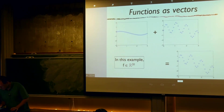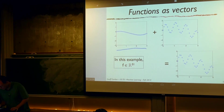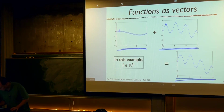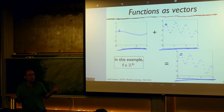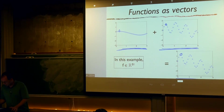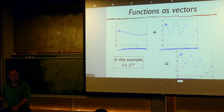We can take this 31-dimensional vector function and add it to another 31-dimensional vector, plotting the result as another function. This is just a representation of a vector. Now I'm going to suggest we blow our minds and imagine the number of sample points goes to infinity — uncountably many dimensions — and think of these as uncountably infinite-dimensional vectors. We'll go through the consequences of doing that for the rest of the lecture.